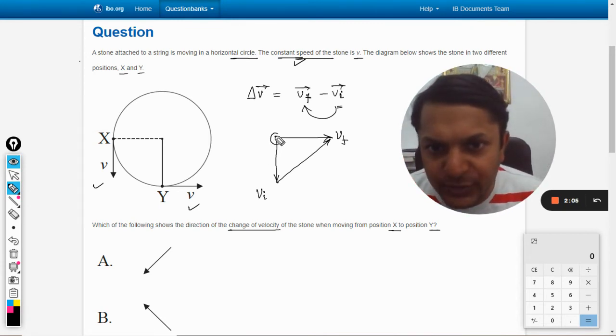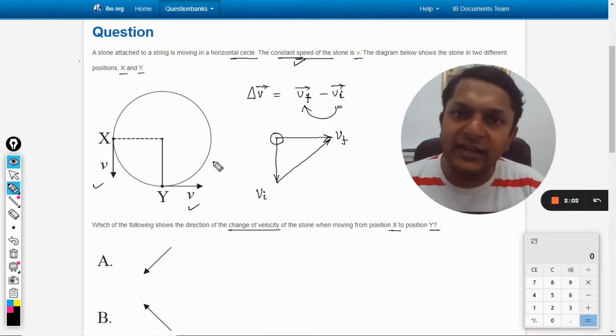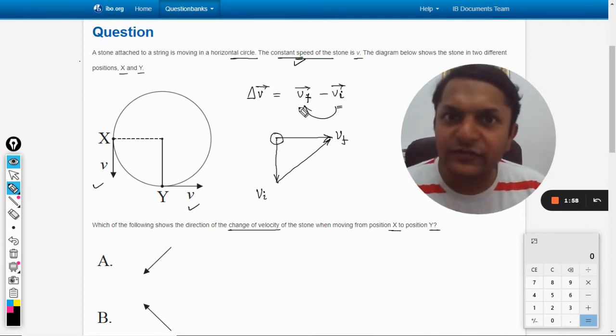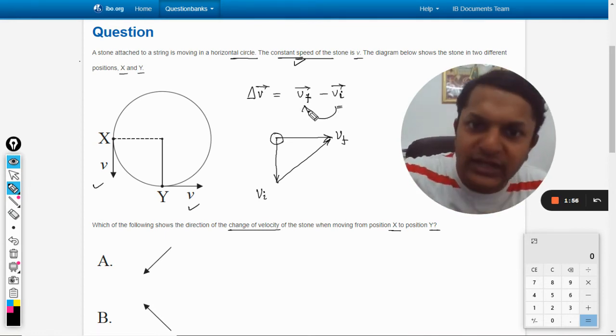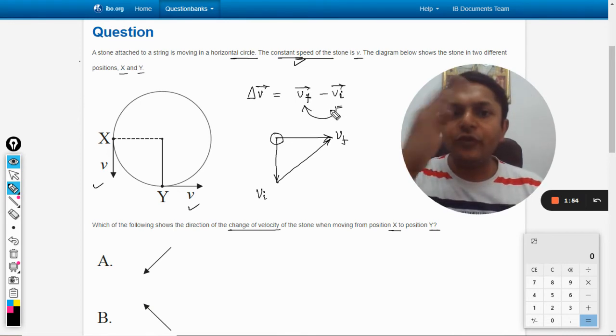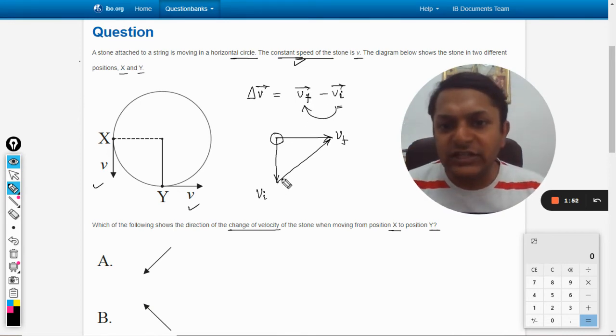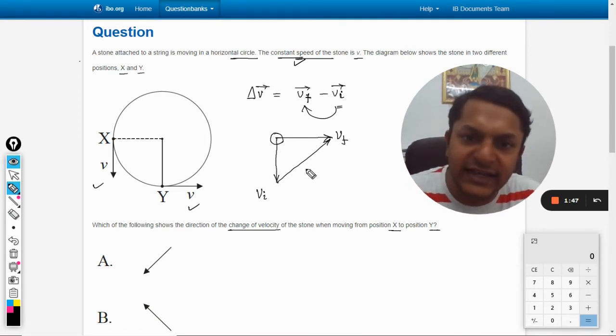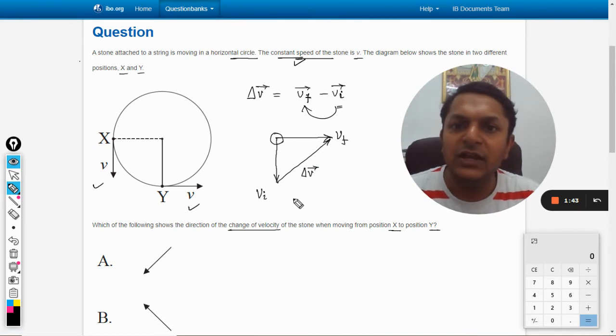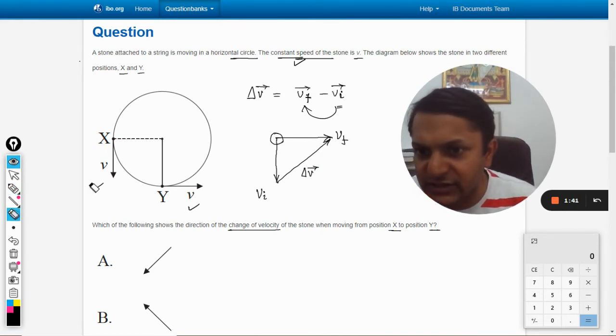This is how we subtract two vectors. We just redraw the diagram with the condition that both of the vectors should be touching each other with their tails. And then what we do is we see here what is initial and what is final. So we move from initial to final. This is how we move. So this will be the vector, the change in velocity vector. So out of the following, let's see.